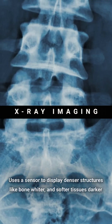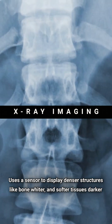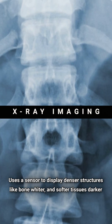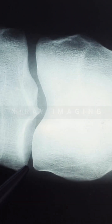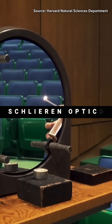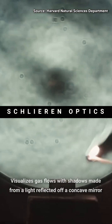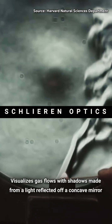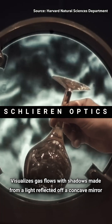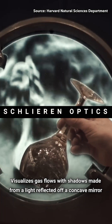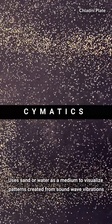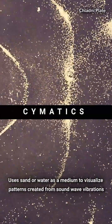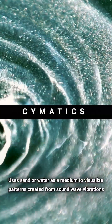X-ray imaging uses a sensor to display denser structures like bone whiter and softer tissues darker. Schlieren optics visualizes gas flows with shadows made from light reflected off a concave mirror. Cymatics uses sand or water as a medium to visualize patterns created from sound wave vibrations.